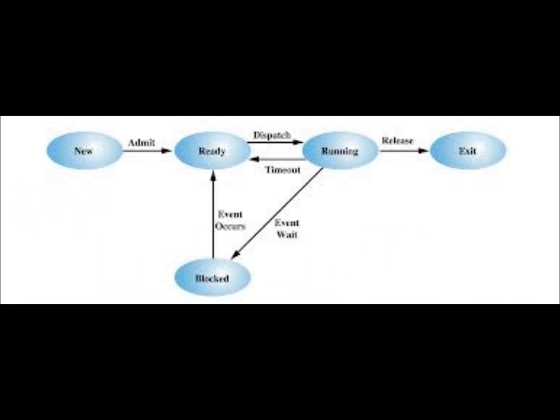In this case we use preemption transitions. As you can see on the screen, the task goes from running to ready state after preemption, and when it gets dispatched again it comes from ready to running state. This is basically the five state model that we use.